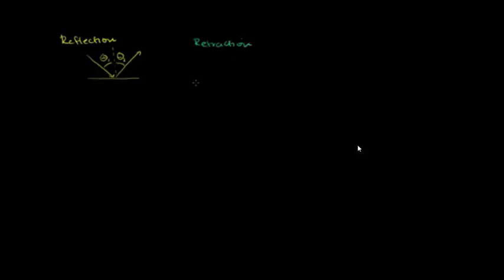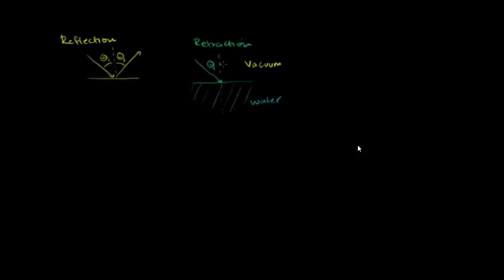With refraction, you still have the light coming in to the interface between the two surfaces. Let's say that's the perpendicular right there — let me continue it all the way down. We have the incident light ray coming in at some angle theta 1. Let's say that up here is a vacuum, where light travels the fastest — no air, no water, nothing. And this medium down here, let's say it's water.